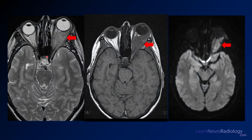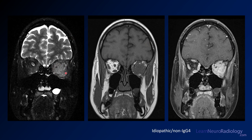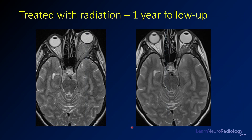Reviewing the MRI findings: T2 intermediate material in the orbit, replacement of orbital fat by T1 iso-intense material, abnormal diffusion, T2 abnormality on fat saturation, and avid enhancement. This case was non-IgG4-related disease, but the appearance is similar. The patient was treated with radiation, and at one-year follow-up the orbital fat has returned, mass effect improved, and proptosis resolved.